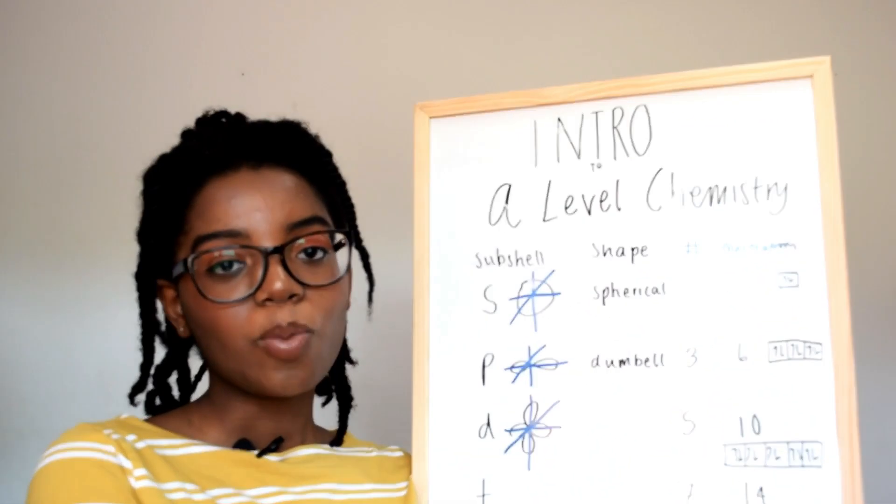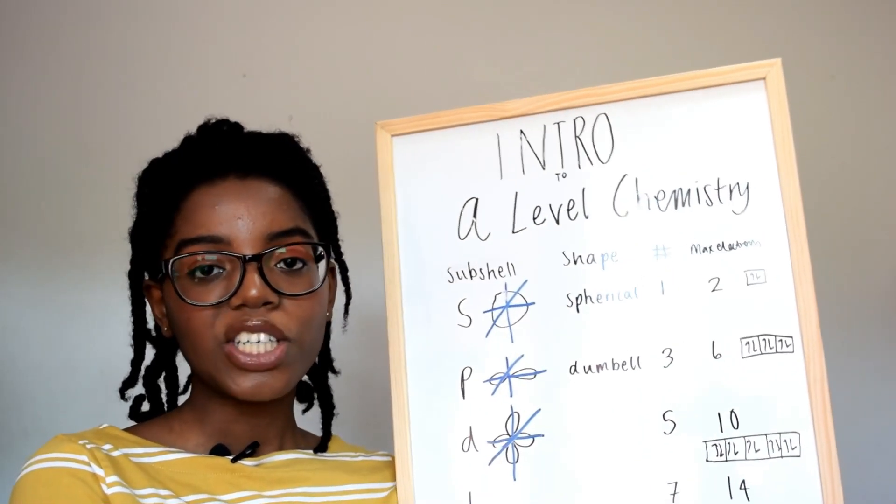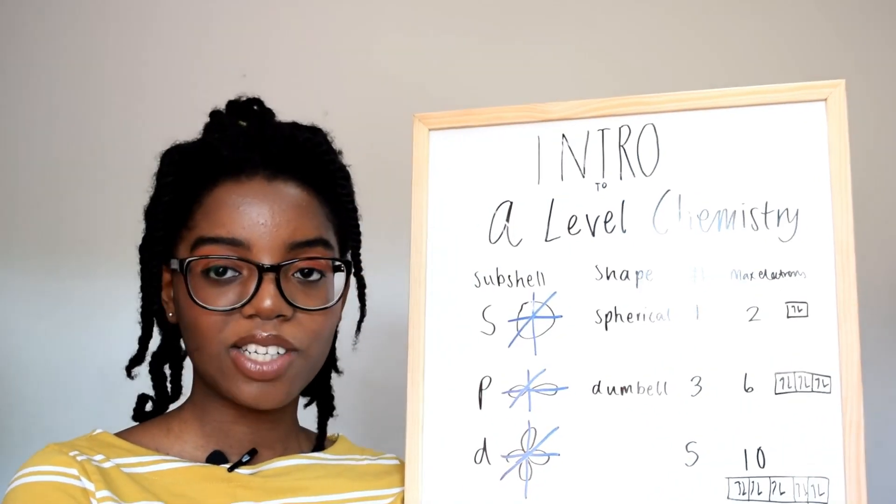These electrons move around the nucleus in shells or energy levels, and these are named principal quantum numbers. Shells furthest from the nucleus have the highest energy. These shells are actually divided into subshells which are given fancy names. There are four main types of orbitals: s, p, d, and f, which means sharp, principal, diffuse, and fundamental.